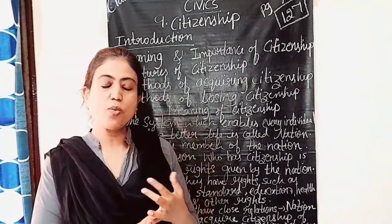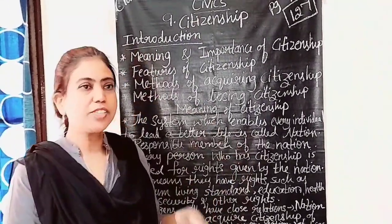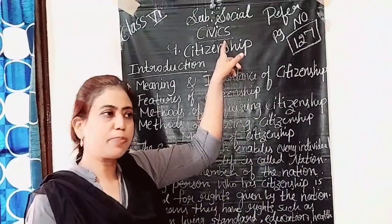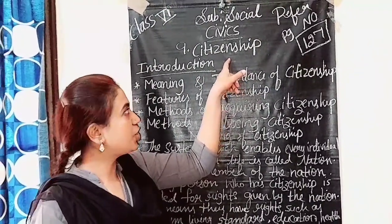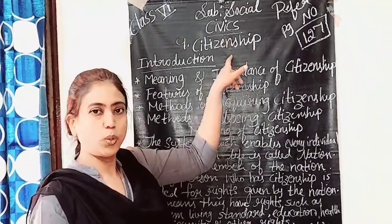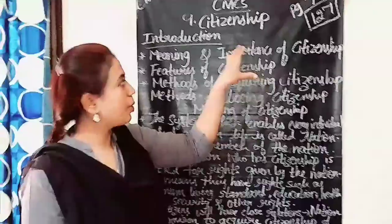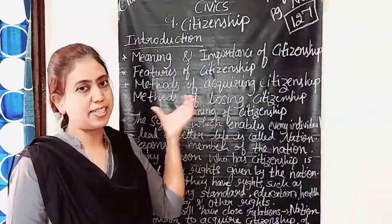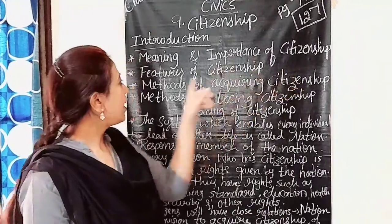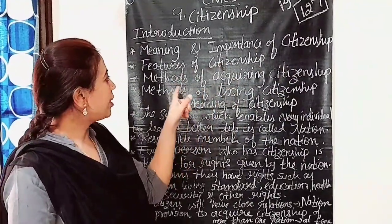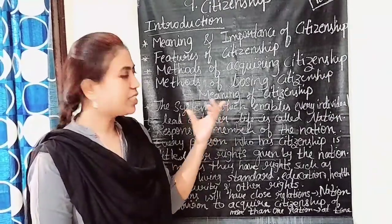In civics, we are dealing with the rights and duties of citizens. In this class we will start the first civics part, lesson number nine — Citizenship. Refer to page number 127. The contents of this lesson include: meaning of citizenship, importance of citizenship, features of citizenship, methods of acquiring citizenship, and methods of losing citizenship.